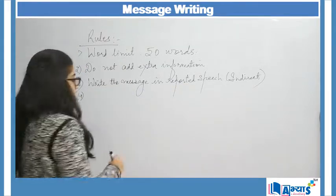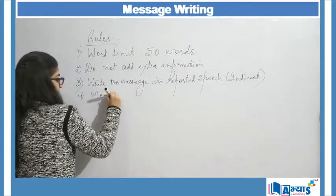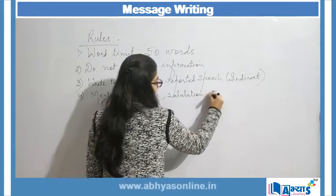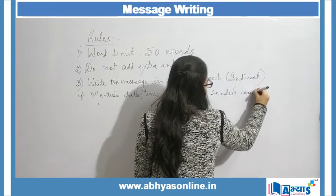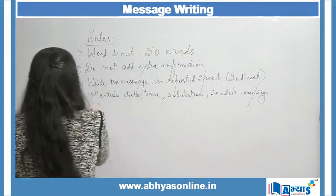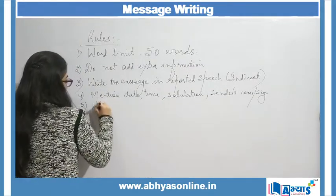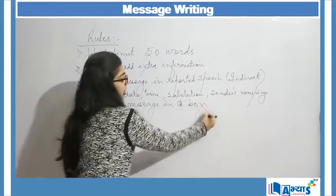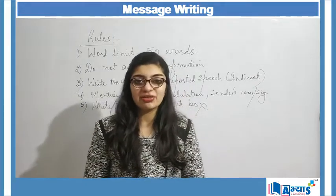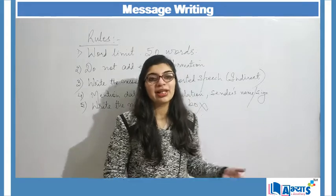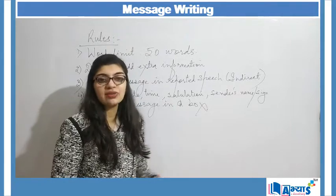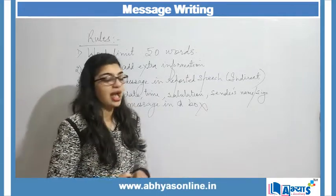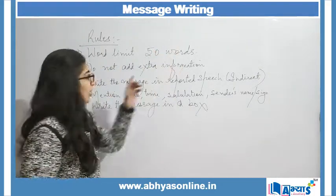Another rule is that you have to mention the date, time, salutation, and sender's name or signature. One very important rule is to write the message in a box. First you have to make a box and then write the message inside it. For message writing there are special memo slips available, but in the examination no such memo slip will be provided. So you have to make a box in your examination sheet and write the message in that box. The message should be within the limit of 50 words.